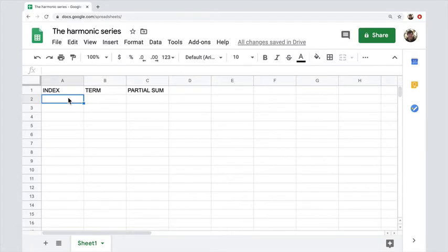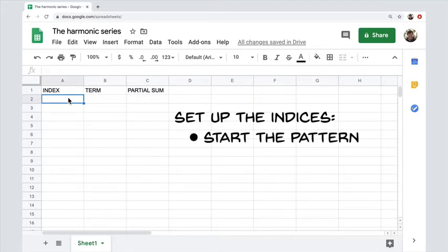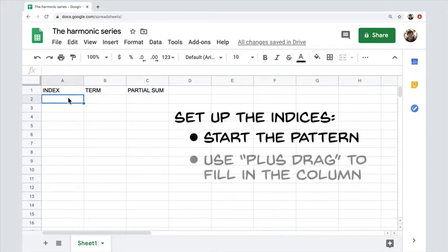So here we are in a spreadsheet, I'm using Google Sheets. The first thing I'm going to do is set up the indices. To do that, we'll start the linear pattern of the indices, and then we'll use the plus drag operation to fill in the column.